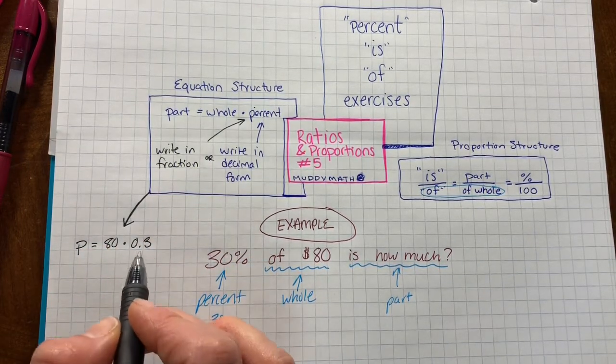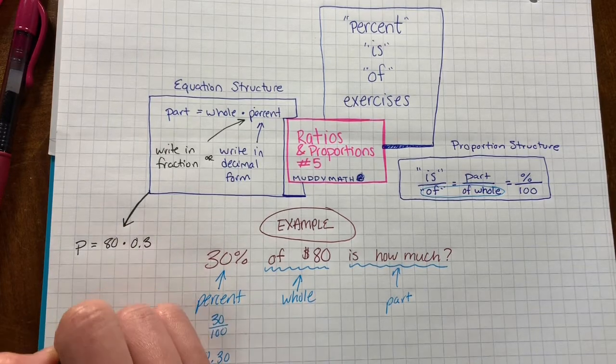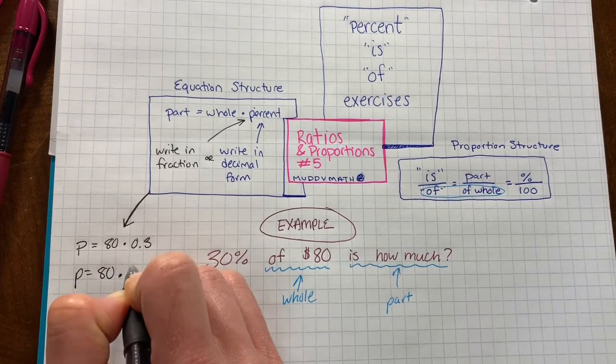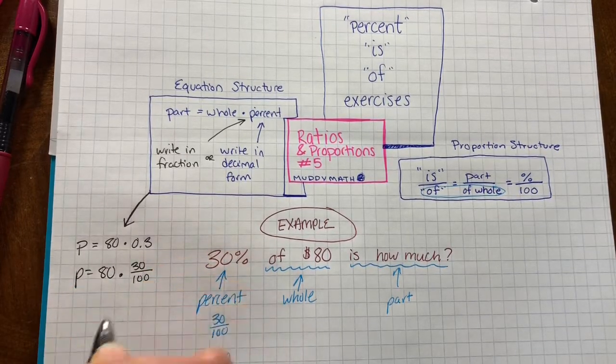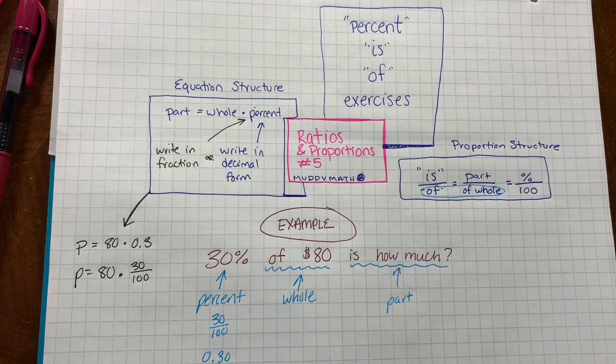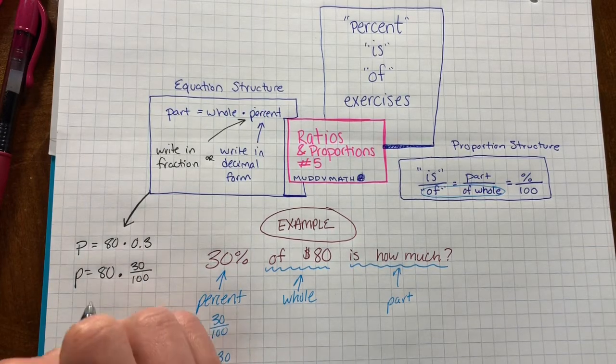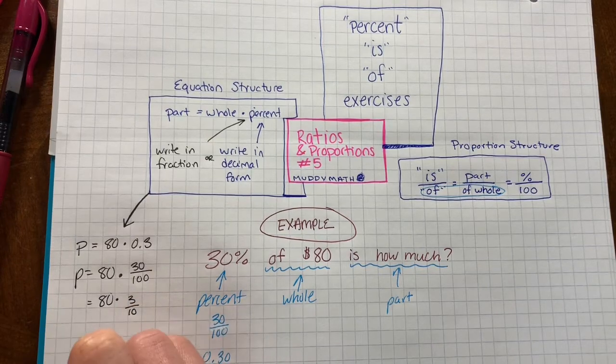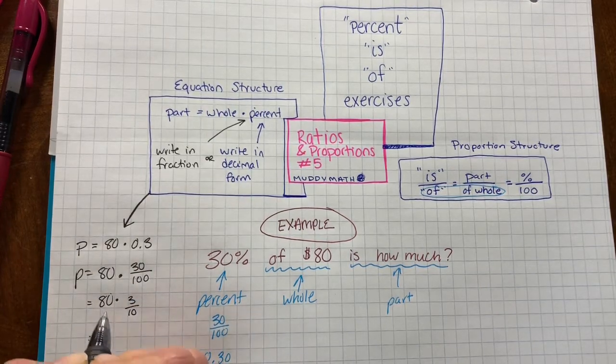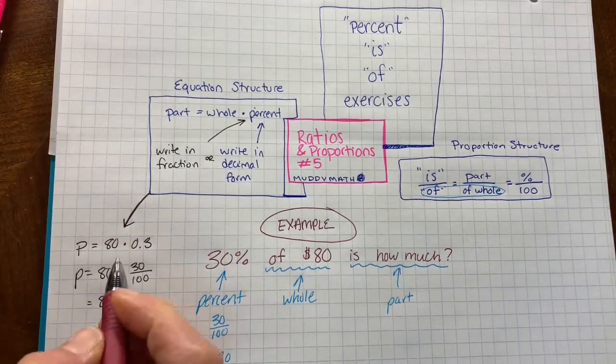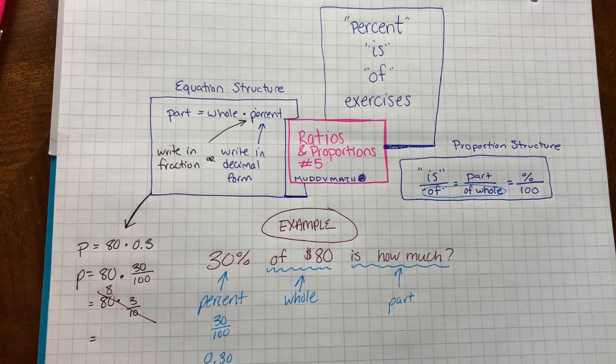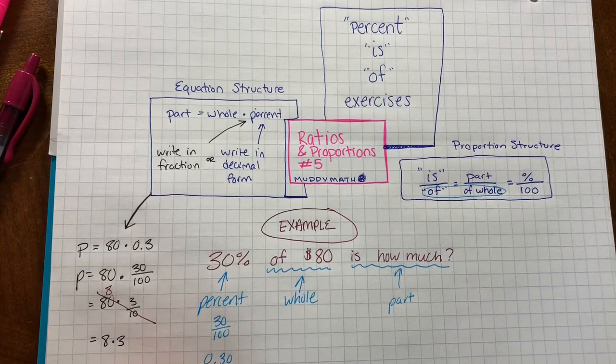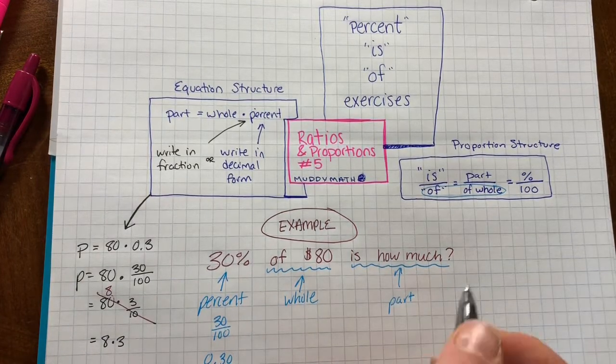You could rewrite the decimal as a fraction. We can simplify 30 hundredths to three-tenths. We can cross cancel. 80 divided by 10 is 8. Then we're left with 8 times 3, which is 24. 24 what? $24.